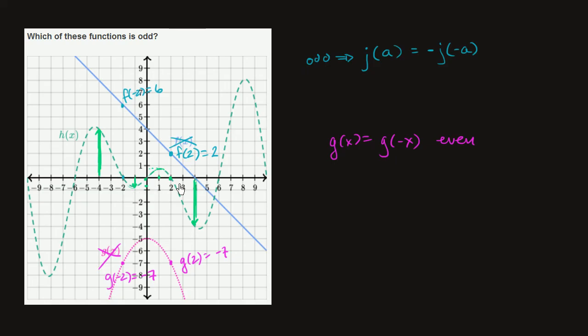But the easiest way to test it is just to do what we did. Look at a given x. So for example, when x is equal to 8, h of 8 looks like this number right around 8. h of negative 8 looks like it's pretty close to negative 8. So they seem to be the negative of each other.